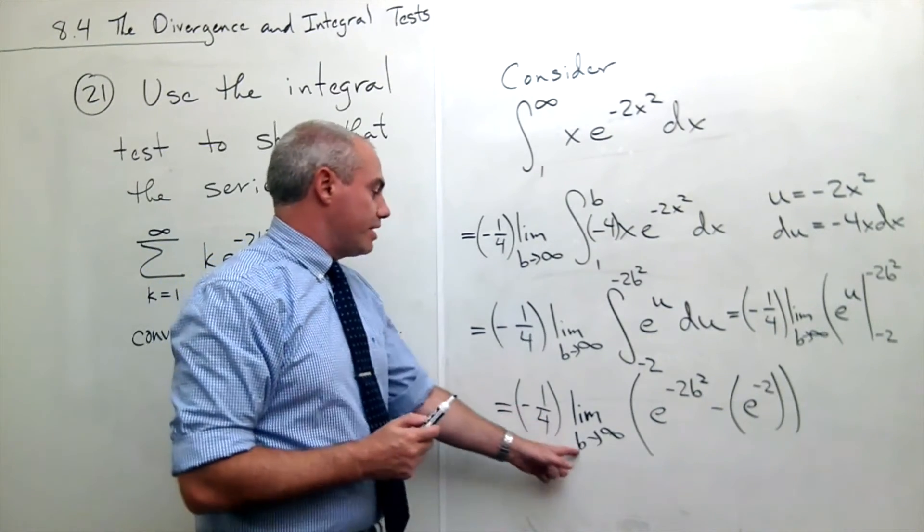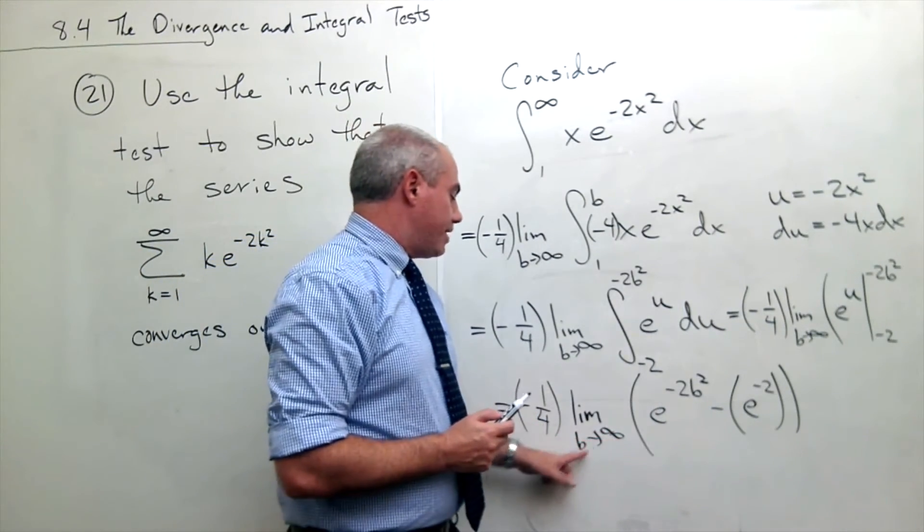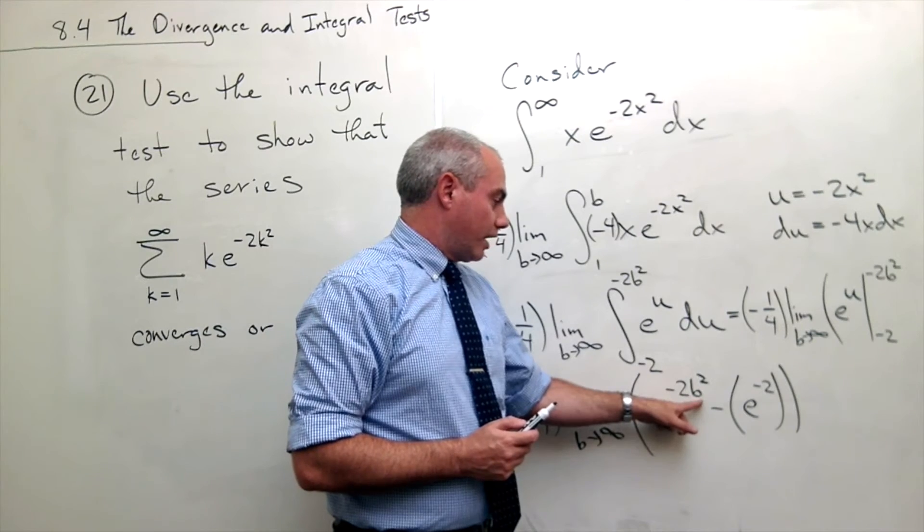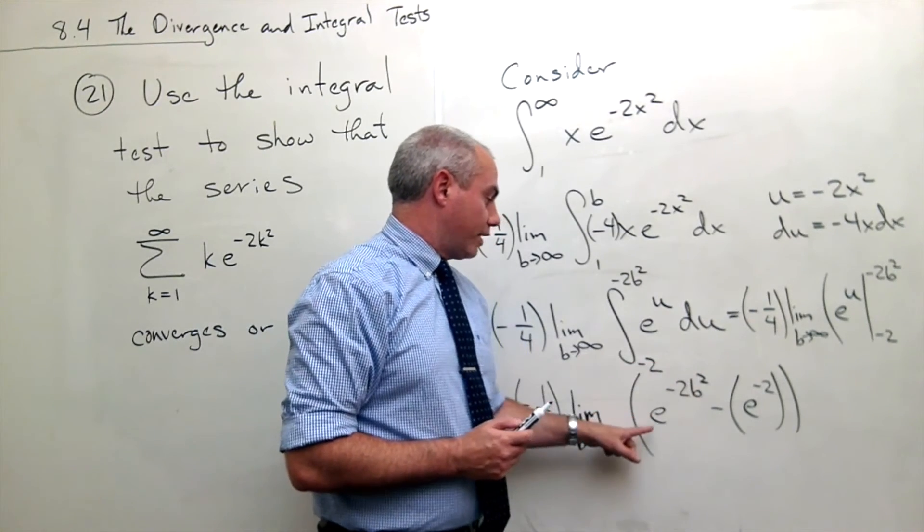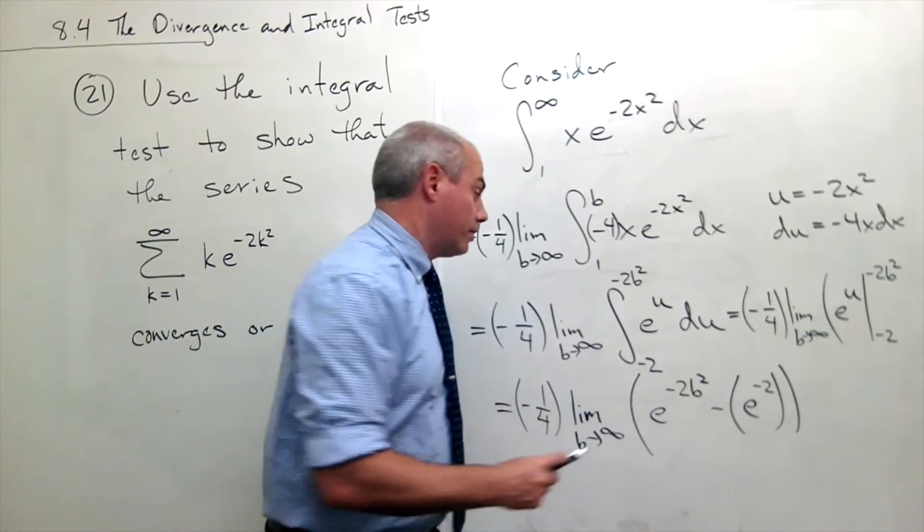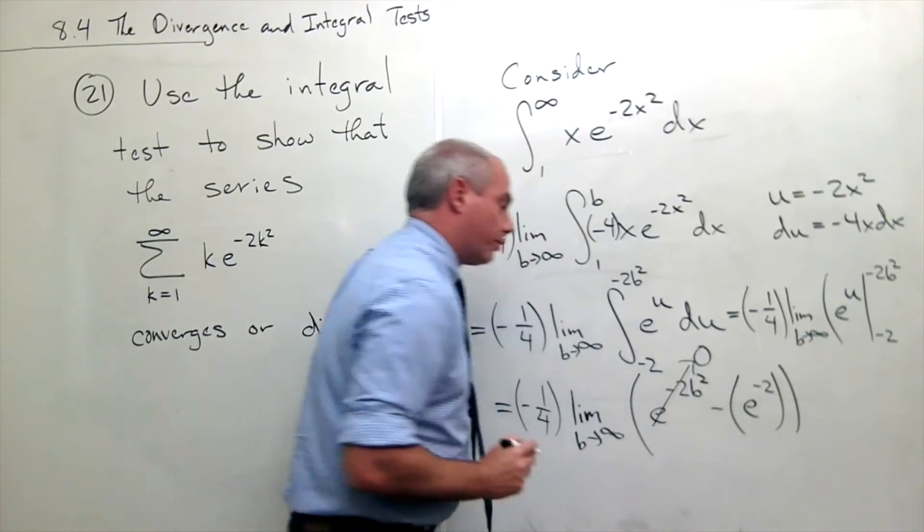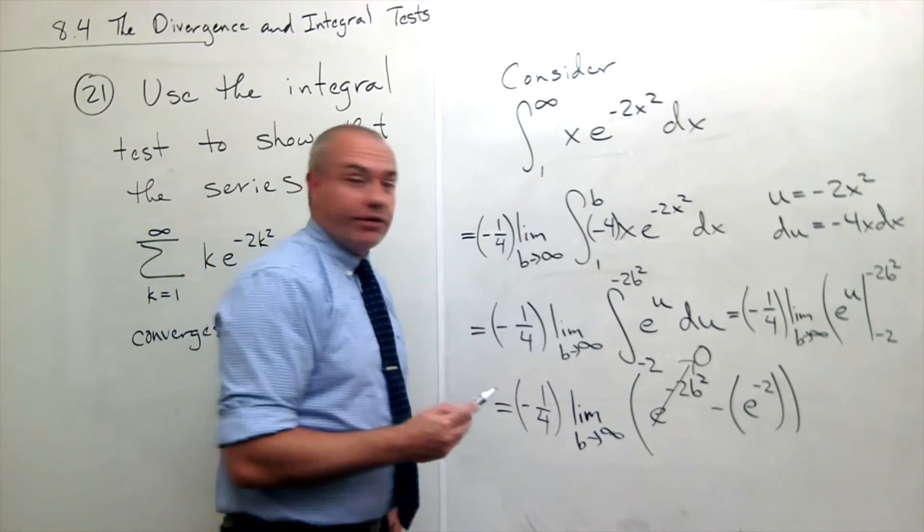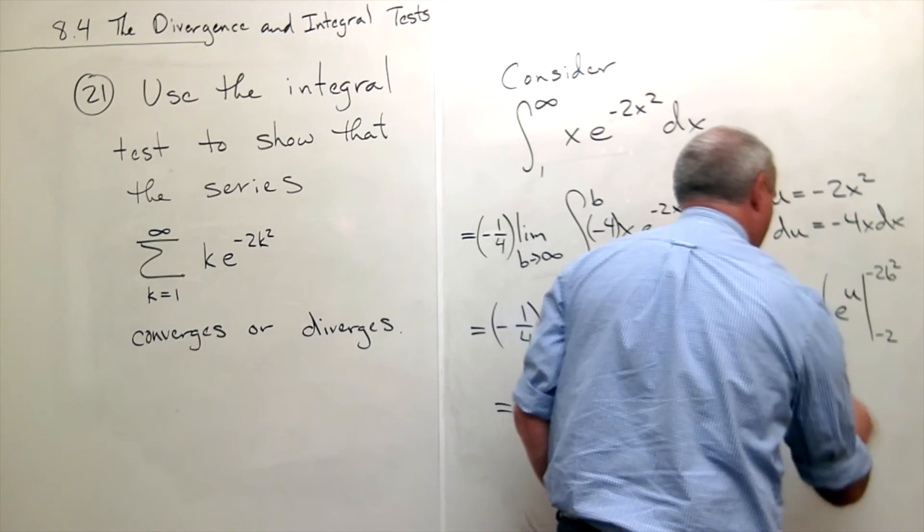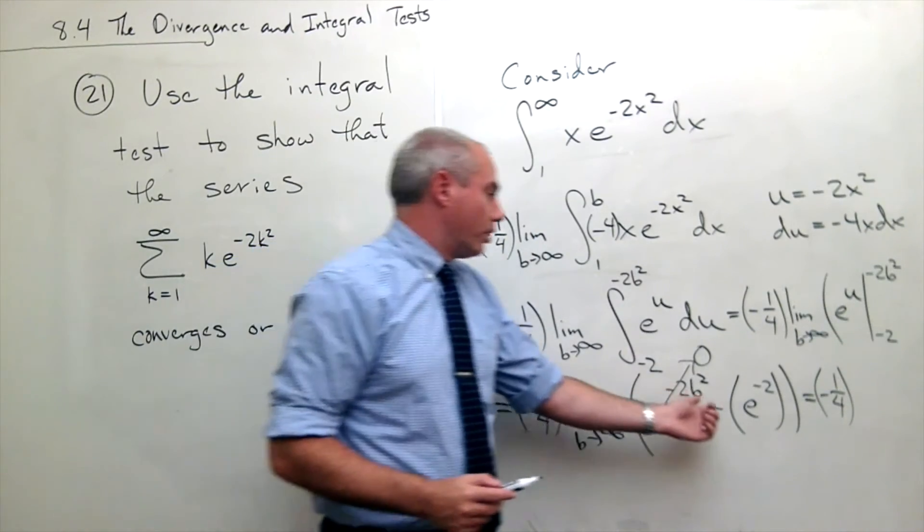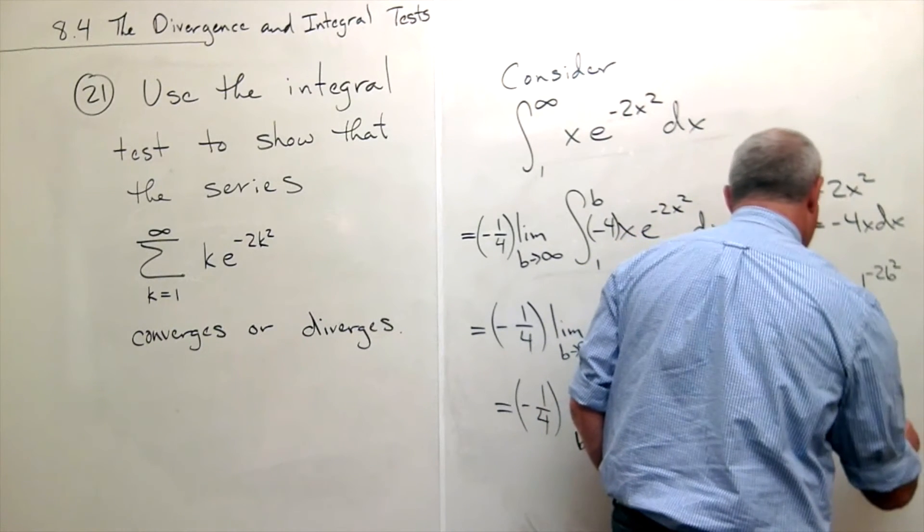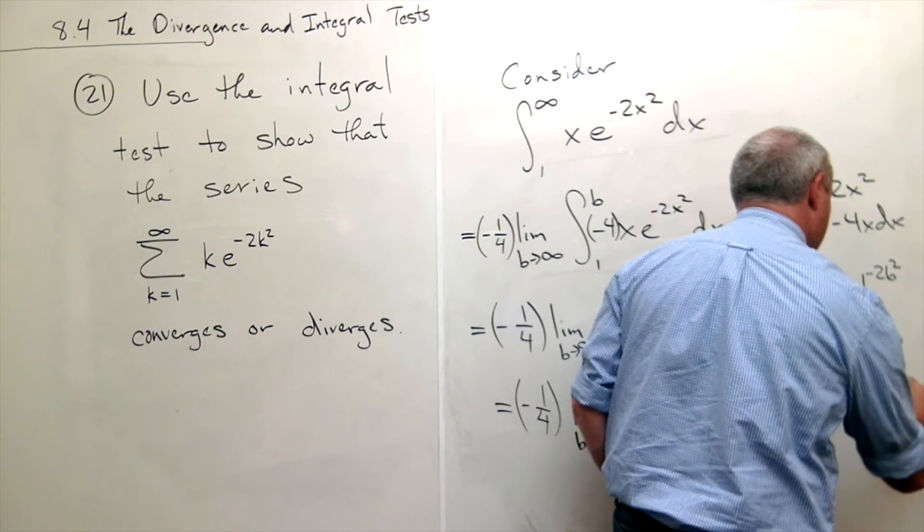Now I'm ready to take a limit as b goes to infinity. As b goes to infinity I get infinity here which gives me minus 2 times infinity. Minus 2 times infinity is negative infinity and e to the negative infinity is going to 0. So this whole term in the limit goes to 0. What I'm left with is minus 1 fourth times what's left over, which is minus e to the negative 2.